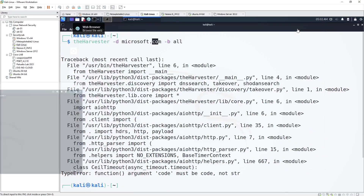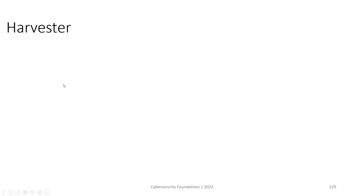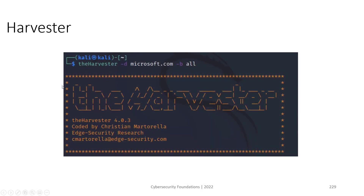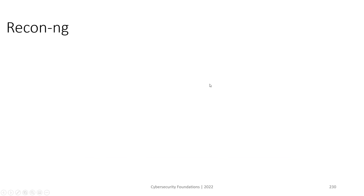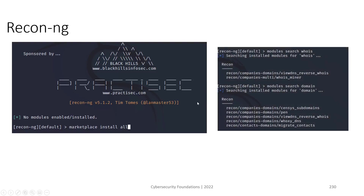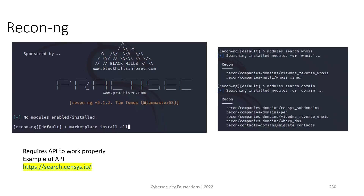In summary, theHarvester is a tool that helps gather information about a specific company, including IP addresses and a list of employees on LinkedIn. This data can then be used in social engineering attacks. Recon-ng is another Kali Linux tool that performs the same function but is more sophisticated and advanced — similar to how Metasploit is a complete exploitation framework, recon-ng is a complete reconnaissance framework for collecting data from multiple sources. That concludes the social engineering section.